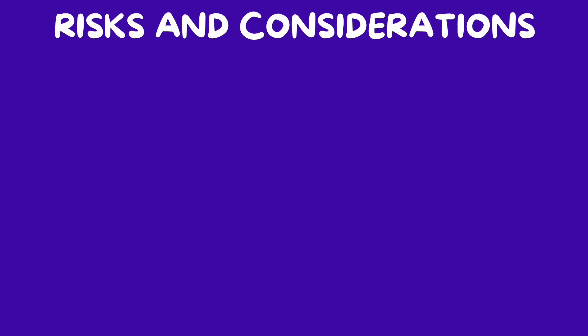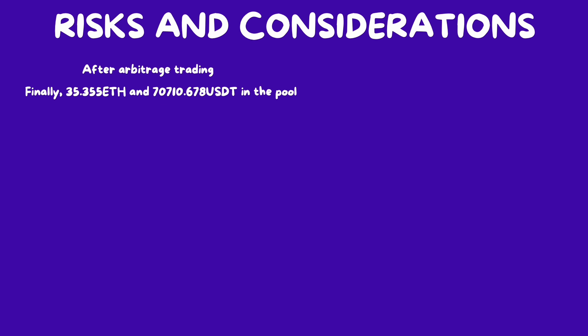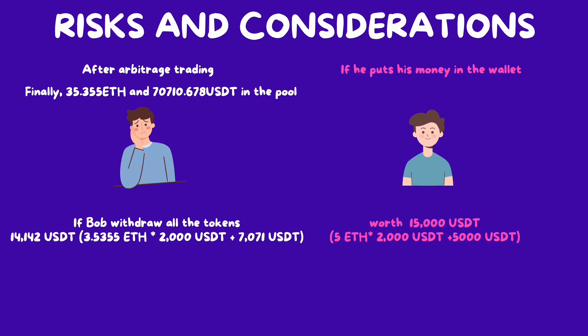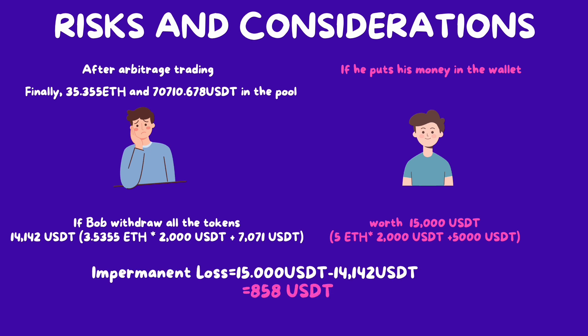Now the price of ETH has doubled. Let's calculate the impermanent loss for Bob. After arbitrage trading, there are about 35 ETH and 70,000 USDT in the pool. If Bob withdraws his 10% share of the pool, he will have about 3.5 ETH and about 7,000 USDT, which is worth about 14,000 USDT. Let's see what would have happened if he had kept his money in his wallet. As the price of ETH reached 2,000 USDT, Bob's assets would be 5 ETH and 5,000 USDT, worth 15,000 USDT. In this scenario, the impermanent loss is about 1,000 USDT. Bob would have been better off by holding rather than depositing into the liquidity pool.